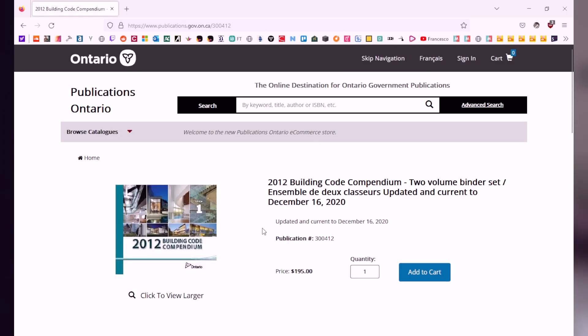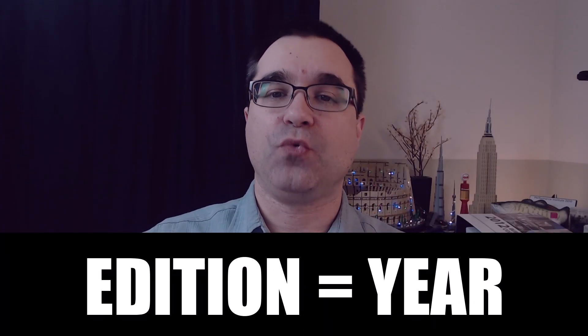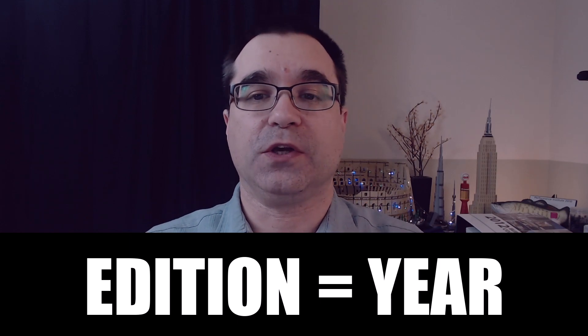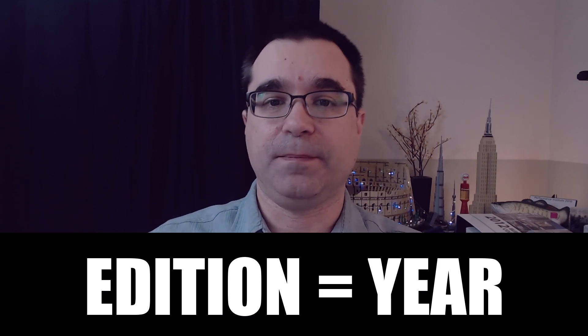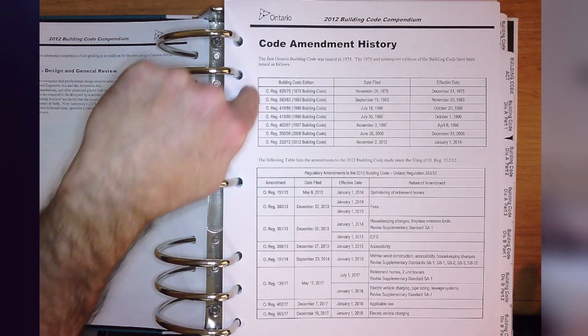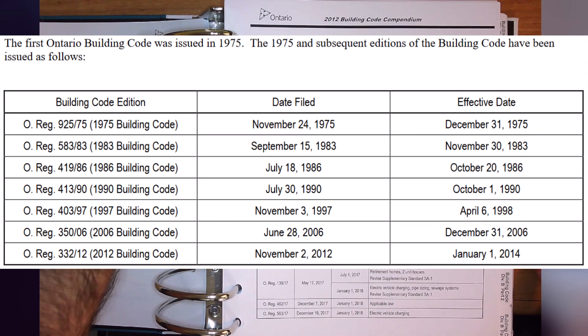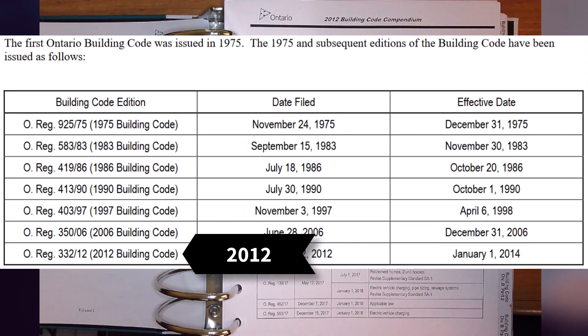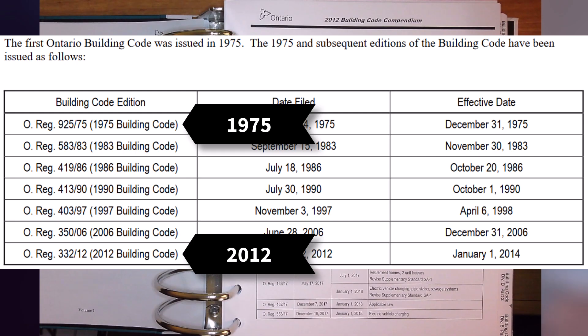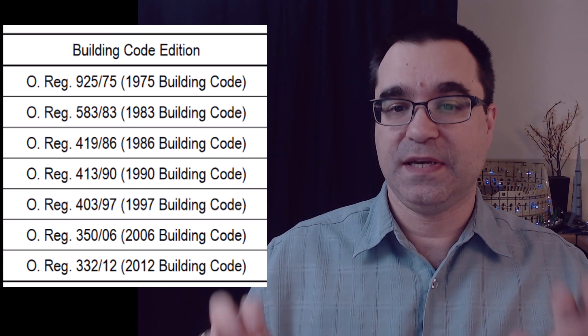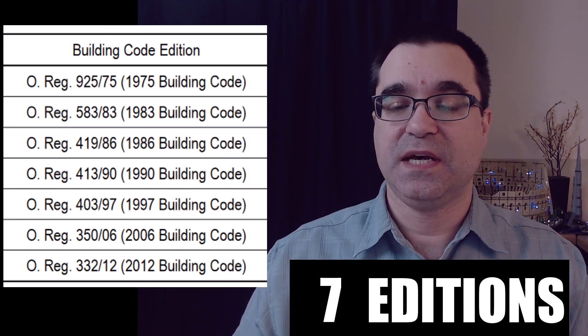As I'm recording this video, Ontario is using the 2012 edition of the Ontario Building Code. The word 'edition' refers to the year when the Building Code was released with major changes — it is the year you see on the cover. I've put on the screen the list of all editions of the Ontario Building Code from the latest one, the 2012 edition, to the very first edition in 1975. Including the 2012 edition, there have only been seven editions.